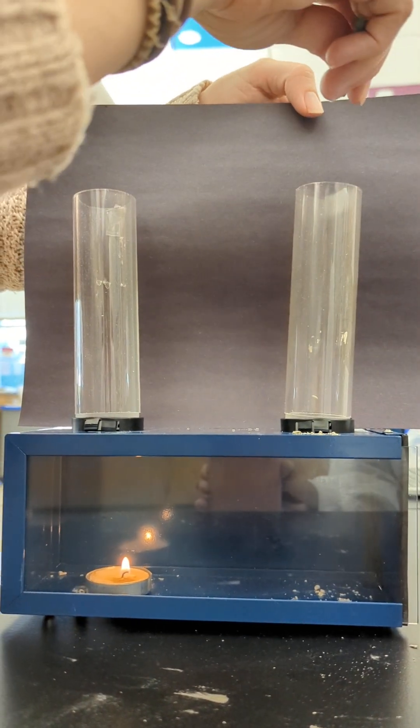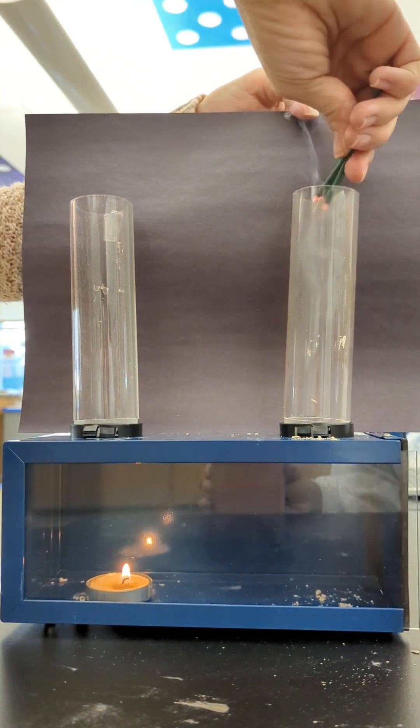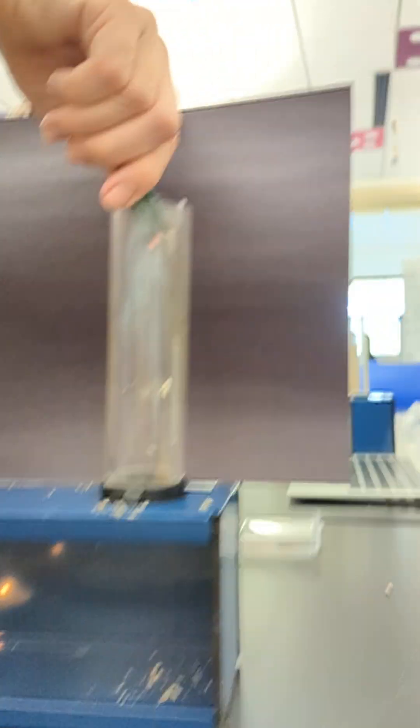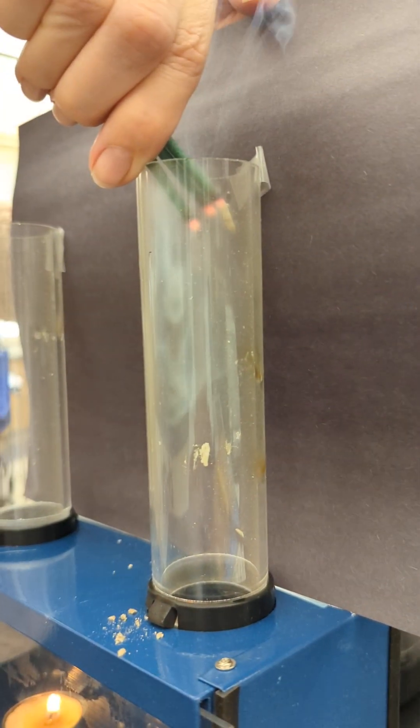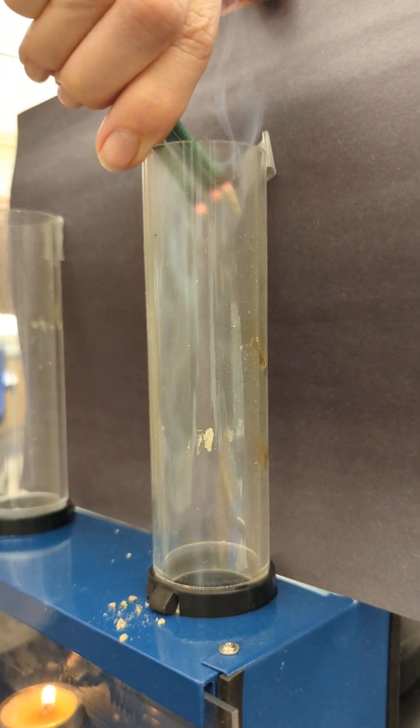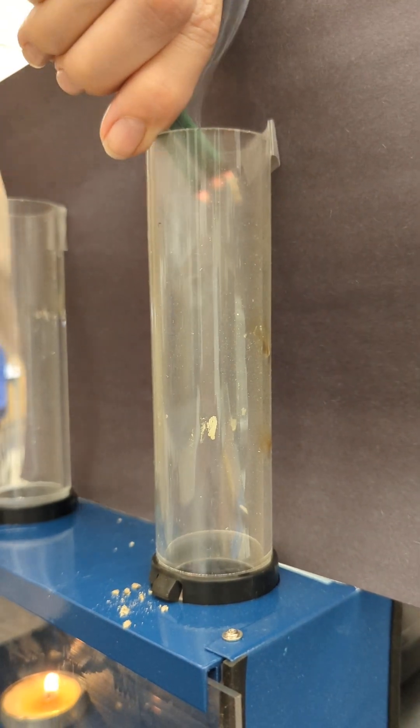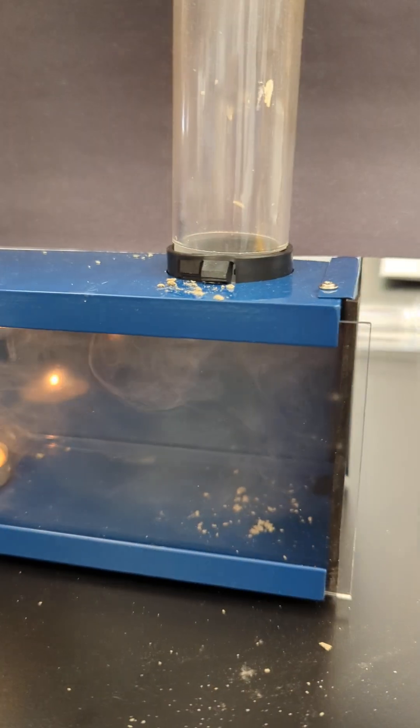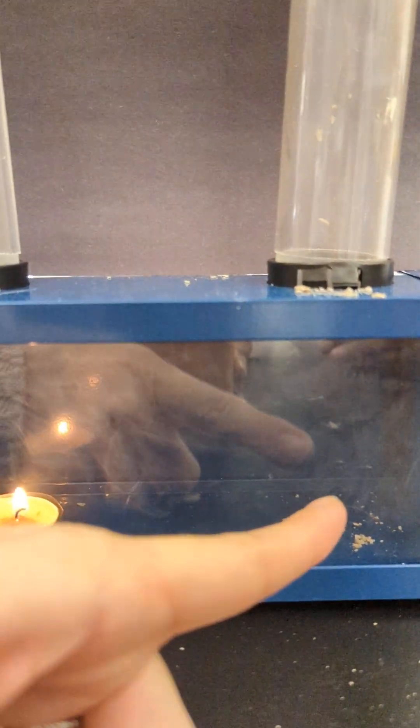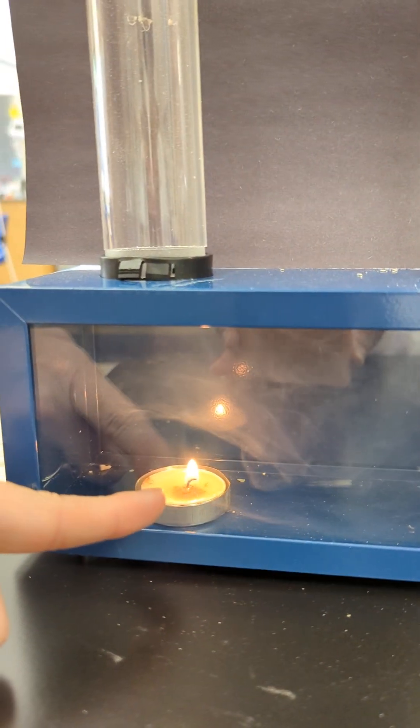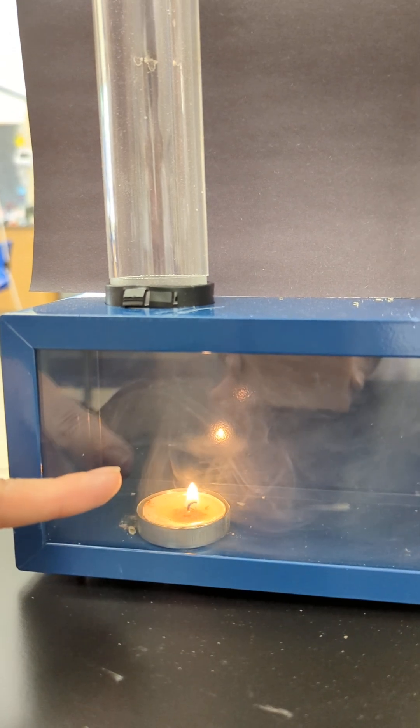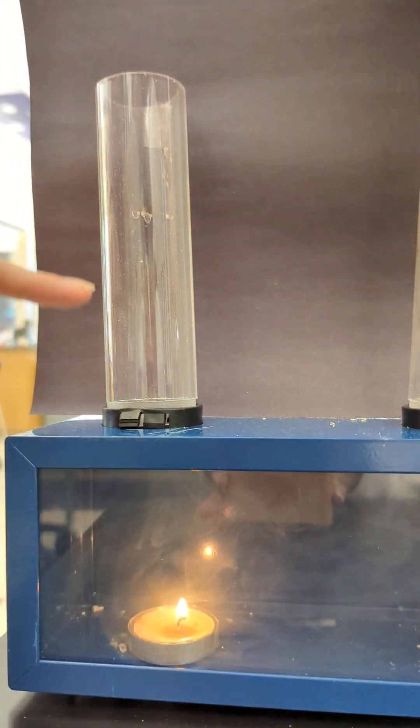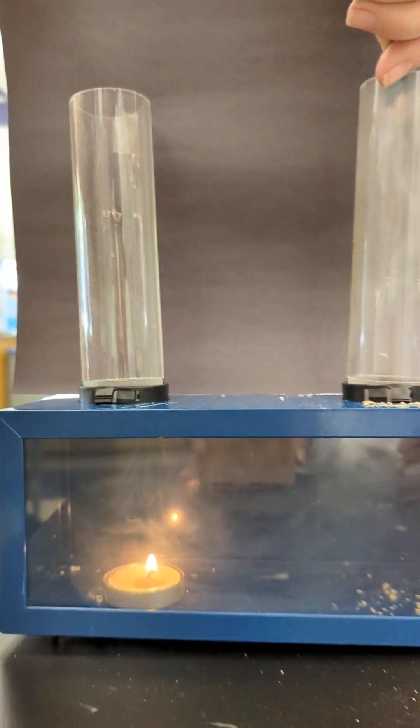And then remember when we put it in chimney two the first time it went up, but now hopefully you're seeing some of the smoke is actually traveling down the tube, across the box, and when it reaches the heat it's actually coming up this tube.